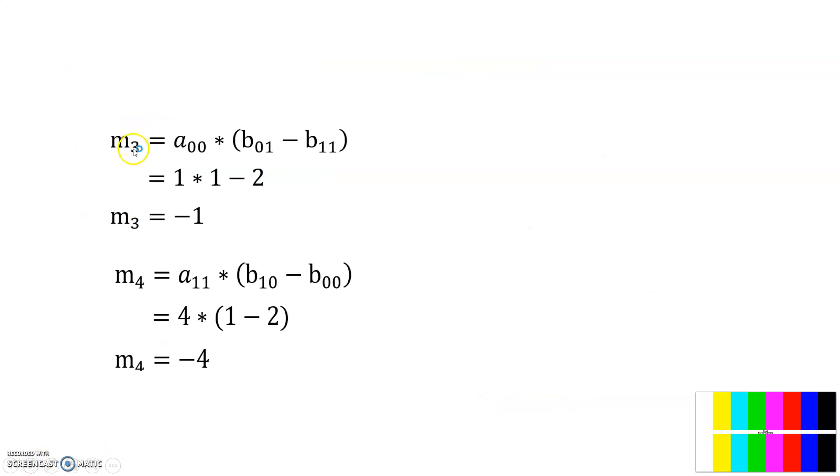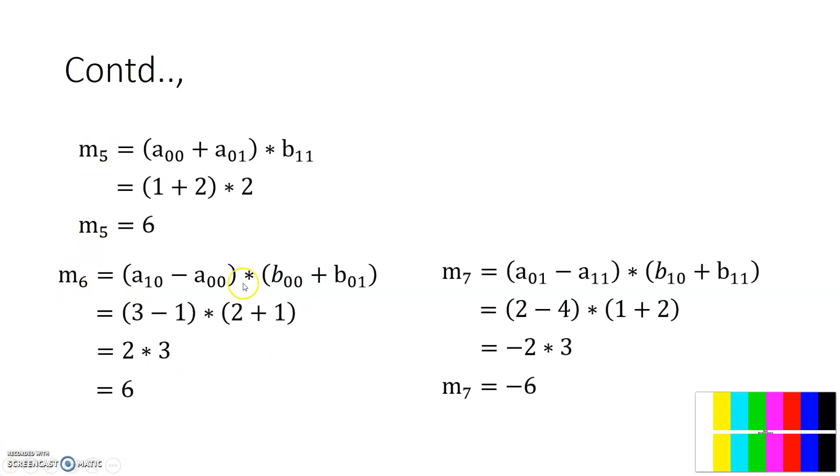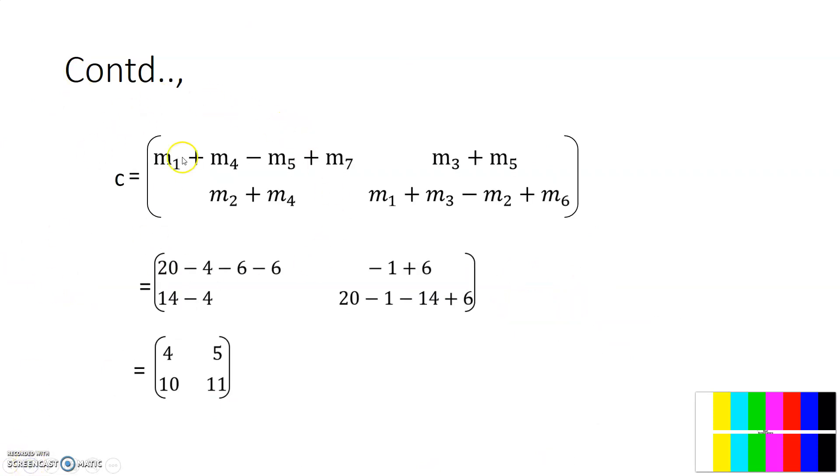In the same way, you have to calculate M3, M4 value using this equation, and M5, M6, and M7 values using this equation. After calculating all the values, you substitute those values in here. After substituting, you will get the product of the final matrix.